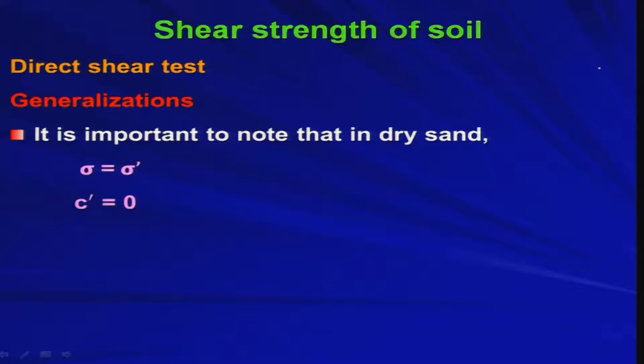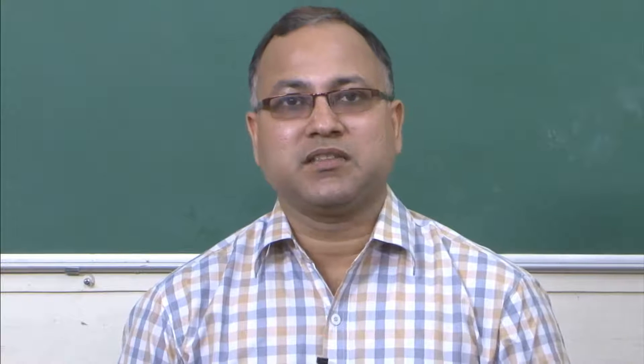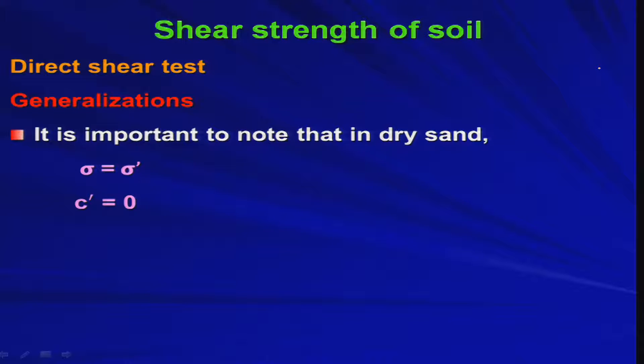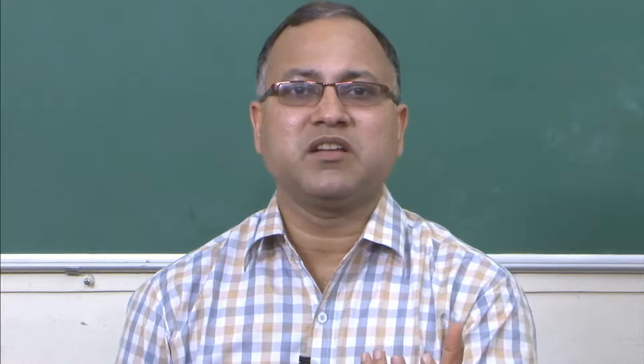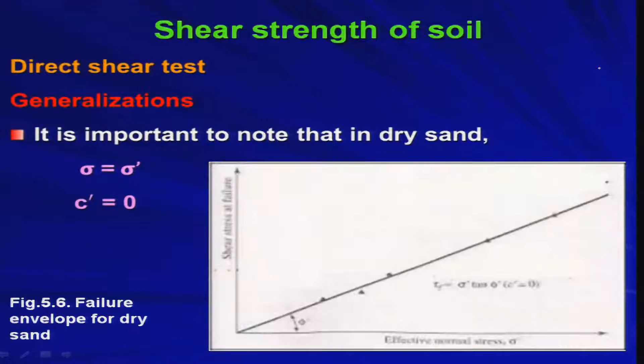It is important to note that in dry sand — completely dry sand with no water at all — sigma equals sigma prime, meaning total stress equals effective stress. Only water causes the difference between total stress and effective stress. If water is not there, total stress must equal effective stress, and c prime, the effective cohesion, must be 0. In dry sand, you can separate out all the individual grains, so there is no cohesion — only the angle of internal friction is present.